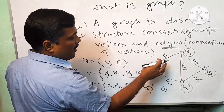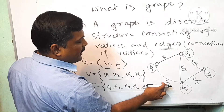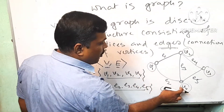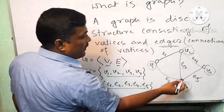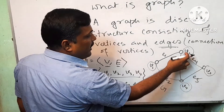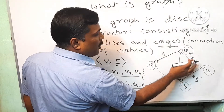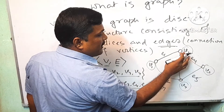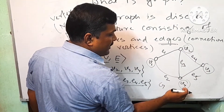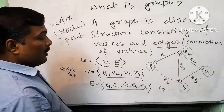For edge E2, the end vertices are V1 and V4. For edge E3, the end vertices are V2 and V4. For edge E4, the end vertices are V4 and V3. And for edge E5, the end vertices are V4 and V3.